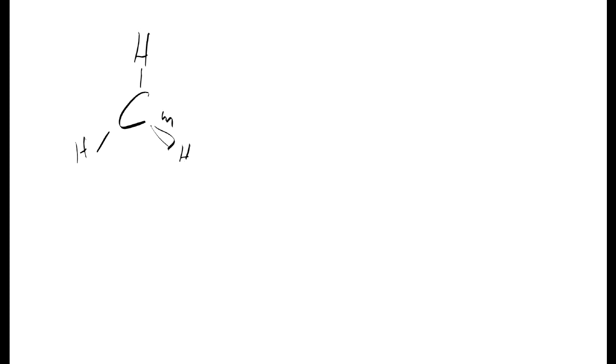That's what polarity means: a negative end and a positive end on a bond. Right now we're just talking about bonds — later in the chapter we'll get into polar versus non-polar molecules, which is more complicated. Now let's look at some pure covalent or non-polar bonds. One example is methane, CH4. Carbon has an electronegativity of 2.5, hydrogen has an electronegativity of 2.1. The difference between those is 0.4, which puts it right on the edge, and we consider these bonds non-polar. Carbon and hydrogen are close enough in electronegativity that their bonds are non-polar.